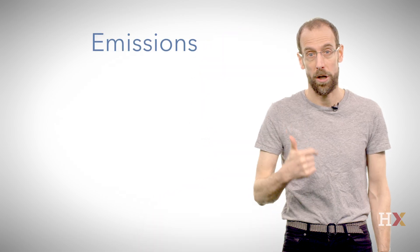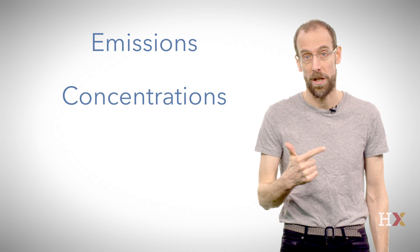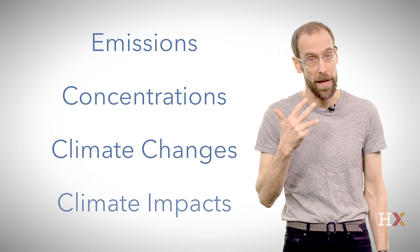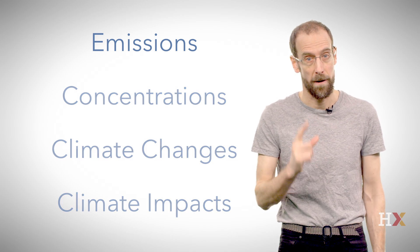How can we stop messing with the climate? To start answering this question, it's useful to break the carbon climate problem into four components: emissions, concentrations, climate change, and climate impacts.